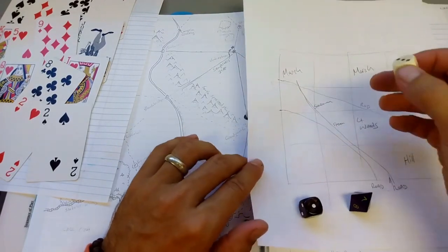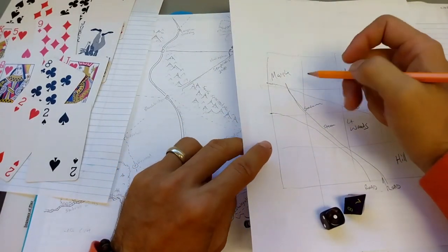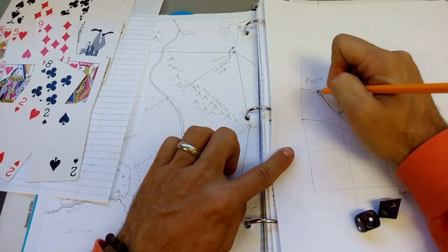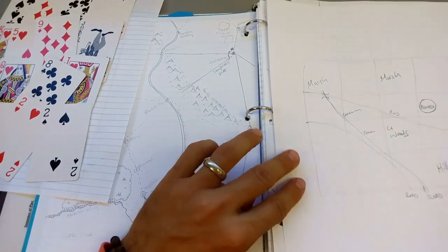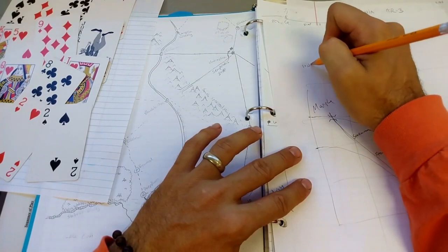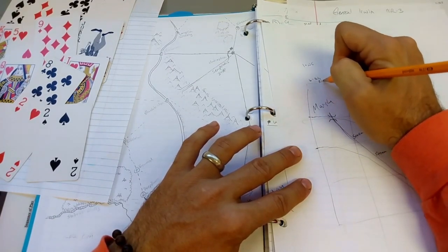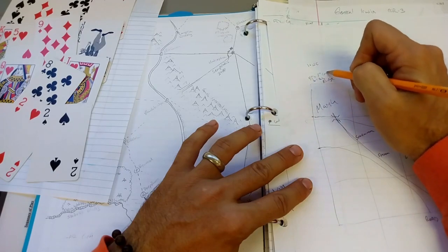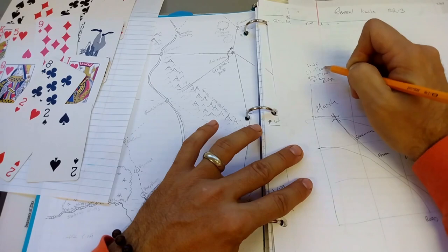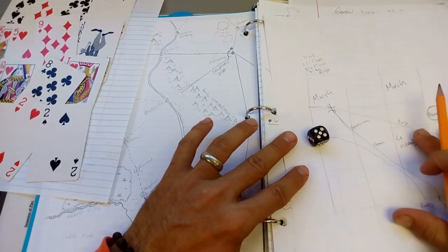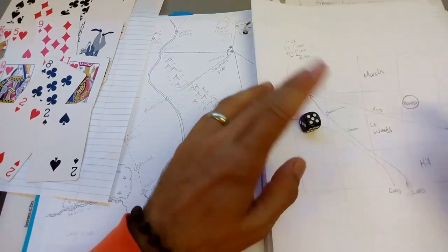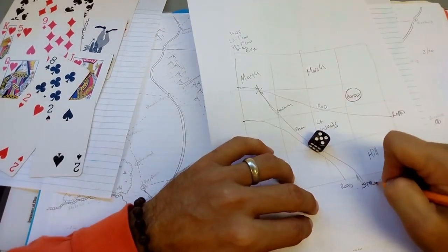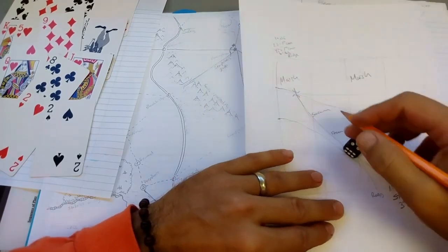How big is a stream? On a 1, it doesn't have any effect. On a 6, the stream cannot be crossed except at the bridge. Obviously, there's a bridge here. On a 4 or 5, it takes 3 inches to cross. Otherwise, on a 2 or 3, it takes 1 inch of extra movement. So, it's a fairly significant stream that costs 3 inches of movement to cross, except, of course, at the bridge.